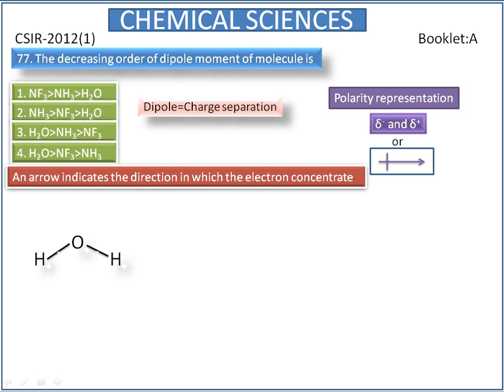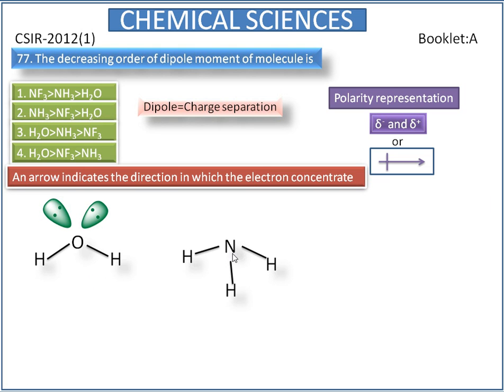This is the water molecule. It has two bond pairs and two lone pairs. This is ammonia. It has three bond pairs and one lone pair.